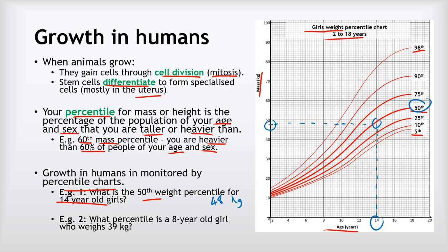Another example: what percentile is an 8-year-old girl who weighs 39 kilograms? Work backwards — trace a horizontal line from 39 kilograms and a vertical line up from age 8, and see where the two lines cross. In this case they cross on the 98th percentile line, so that 39-kilogram 8-year-old would be in the 98th percentile.